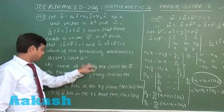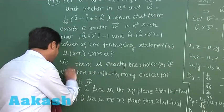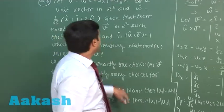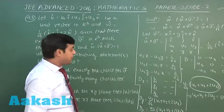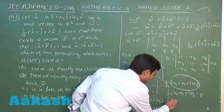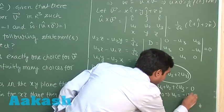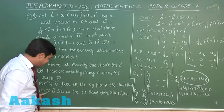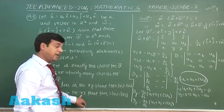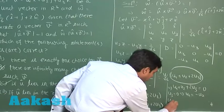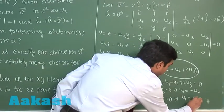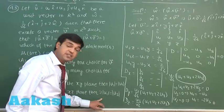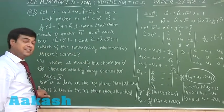Looking at the options: option A says exactly one choice for v — this is not correct, there are infinitely many choices, so option B is correct. Option C: if u-cap lies in the x-y plane, then u3 = 0, substituting gives u1 = −u2, so |u1| = |u2|, which confirms option C is correct. Option D: if u-cap lies in the x-z plane, u2 = 0 gives u1 = −2u3, so |u1| = 2|u3|, which is not matching the given option. So options B and C are correct.